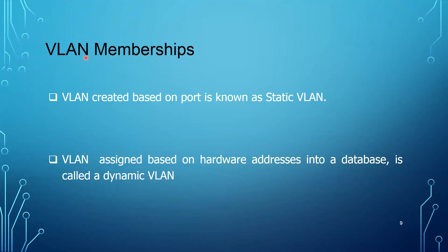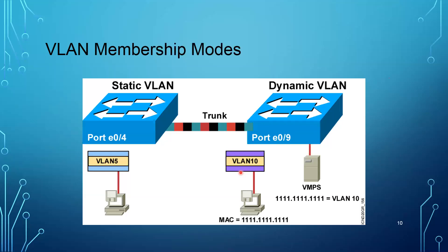Now, if I want to do VLAN configuration or VLAN implementation, how do we divide the VLAN? We have two types of implementation. I'm going to cover one of them in this session. We have the static VLAN and the second one is the dynamic VLAN. The static VLAN implementation is what I've already explained — if I have a switch with 24 ports and I want to divide it into VLANs, I say ports from one to four belong to VLAN 5, from five to ten belong to VLAN 10, and so on. The division of VLANs is based on the port numbers.